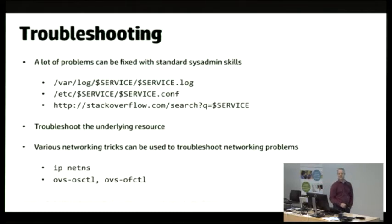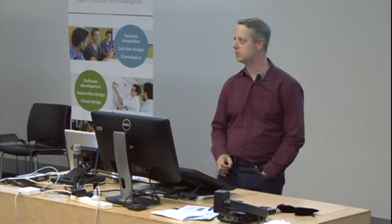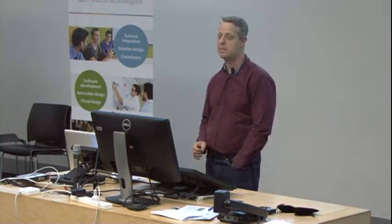For troubleshooting your little server — what do you do when something goes wrong? You look in the log file. Then you poke around in the configuration file to see if it's not configured the way you thought. Then you go search on Stack Overflow. Because the individual components of OpenStack are in front of an underlying resource, you troubleshoot the underlying resource. Networking is probably the only really tricky thing to worry about, using a few projects your average sysadmin might not have seen: IP network namespaces — the technology that allows network isolation, much like control groups and Docker allow process isolation — and OpenVSwitch, which has a bunch of command line tools to poke around at what's going on.